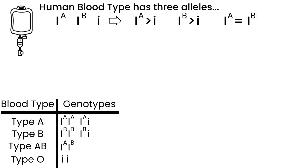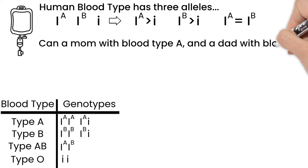From this information, can a mom with blood type A and a dad with blood type B have children with all four blood types?